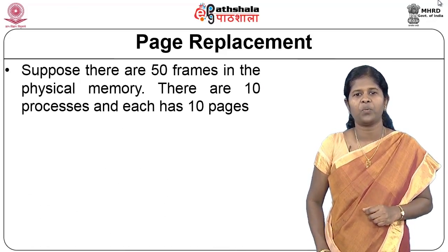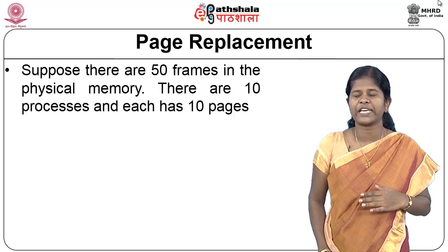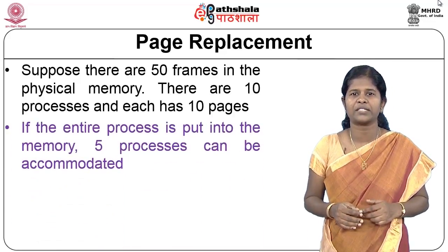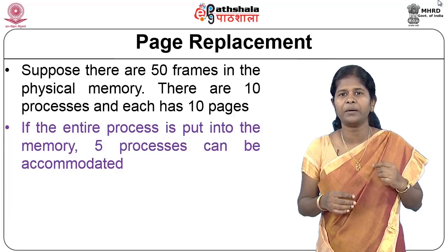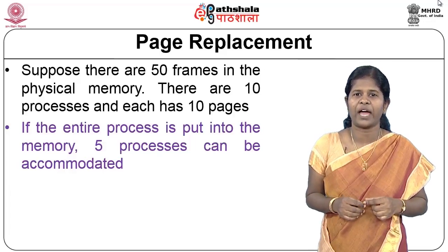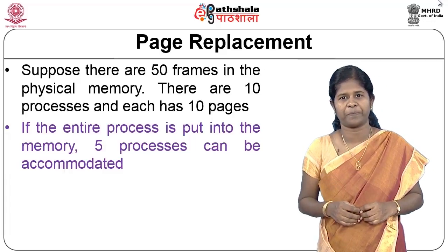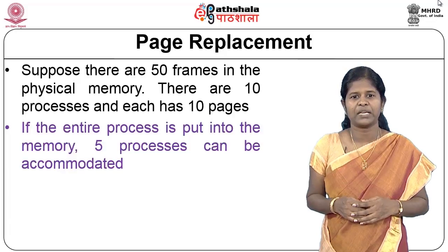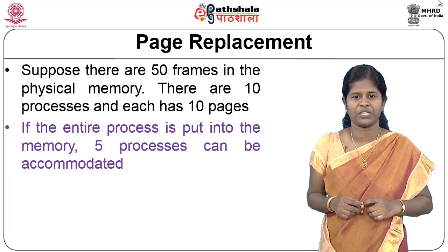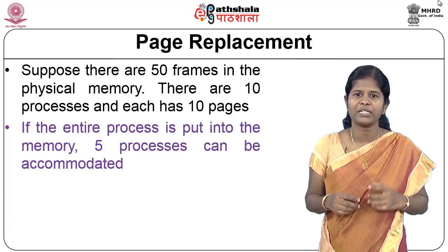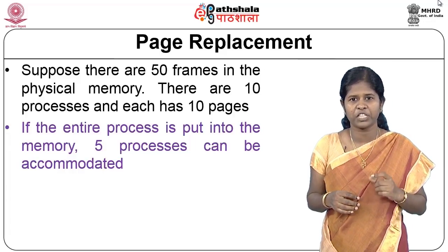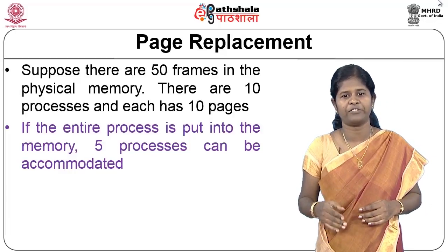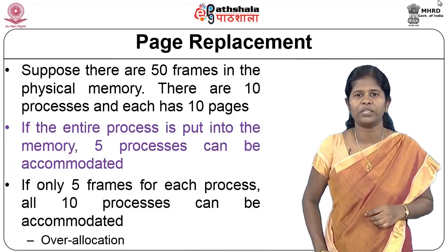Consider an example: you have 50 frames in physical memory and 10 processes, each with 10 pages. To bring all processes fully into memory you would need 100 physical frames. But if each process uses only 5 pages at a time, you can accommodate all 10 processes using only 50 frames — 5 pages per process times 10 processes equals 50 pages total.